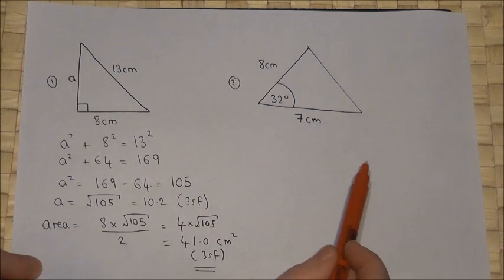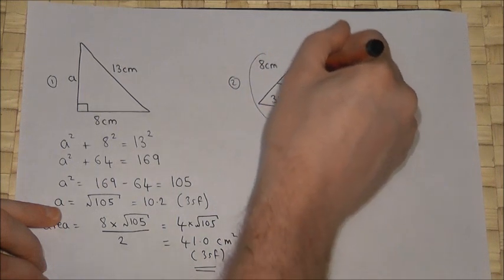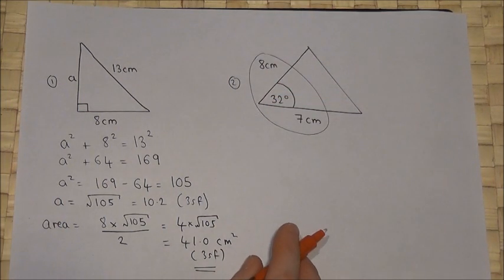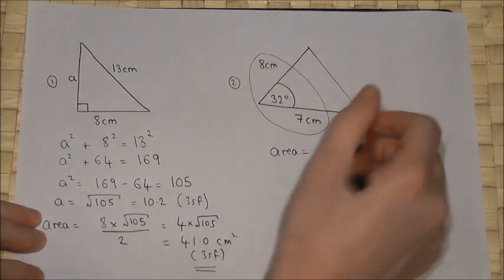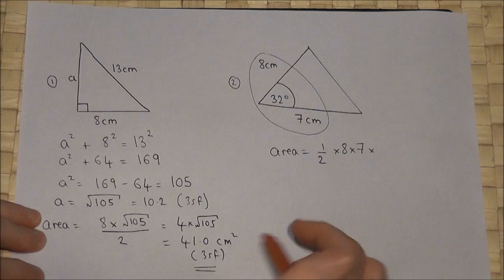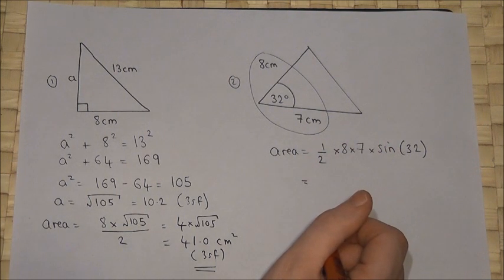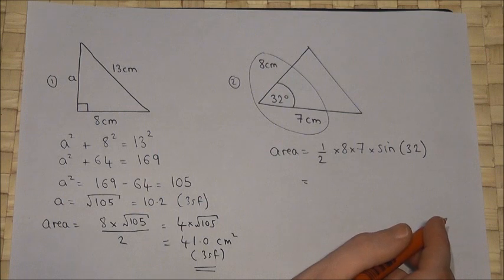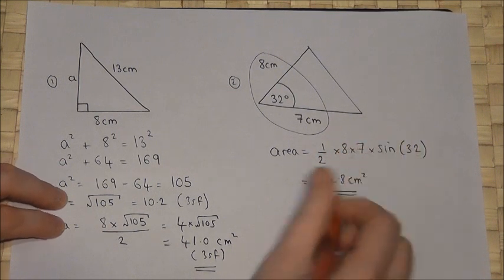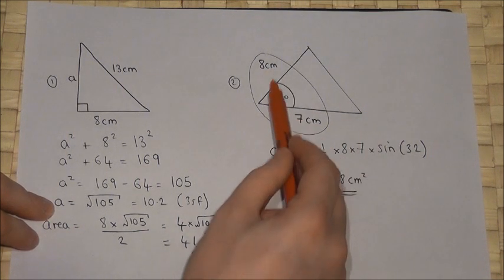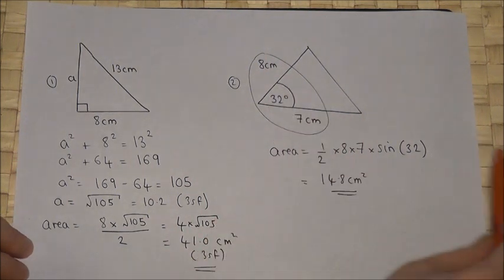The second harder example is where we know two sides and the angle enclosed between them — the SAS rule: side-angle-side. There is a formula for this: area equals one half times the two sides multiplied together, then times sine of the enclosed angle. Working it out: 8 times 7 times sine 32 degrees, divided by 2, gives 14.8 centimetres squared. This formula works whenever you know two sides and the included angle.